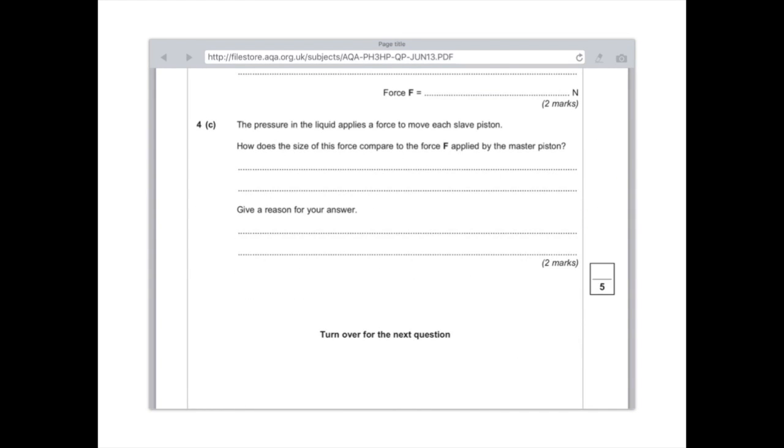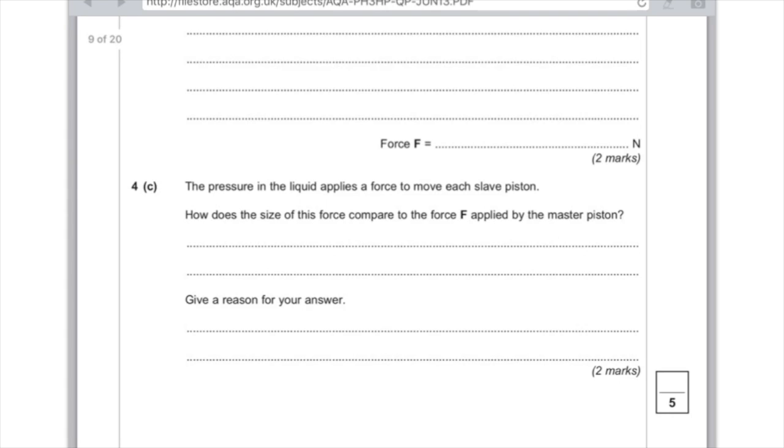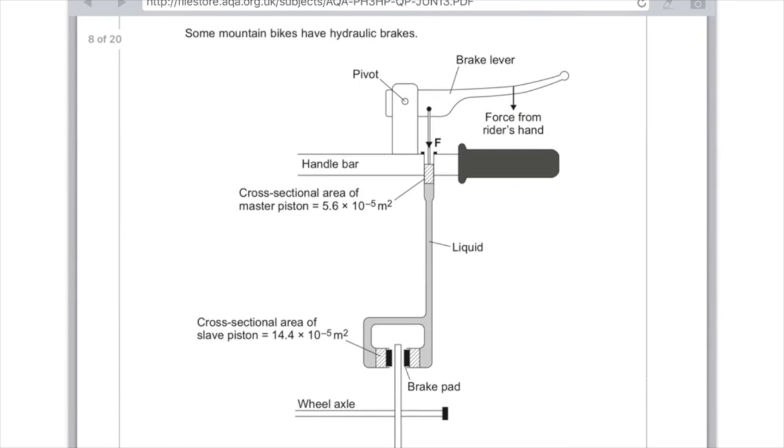For part C, the pressure in the liquid applies a force to move each slave piston. How does the size of this force compare to the force F applied by the master piston? Give a reason for your answer. So, what you want to do here is compare the areas of both the master piston and the slave piston. And as you can see here, the master piston has an area of 5.6 times 10 to the minus 5, whereas the slave piston has a larger area of 14.4 times 10 to the minus 5.